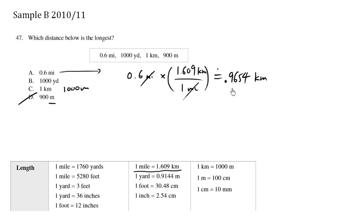Now to convert kilometers to meters, it's quite easy. Multiply by a thousand where you move the decimal one, two, three over. We have 965.4 meters, which is less than a thousand.